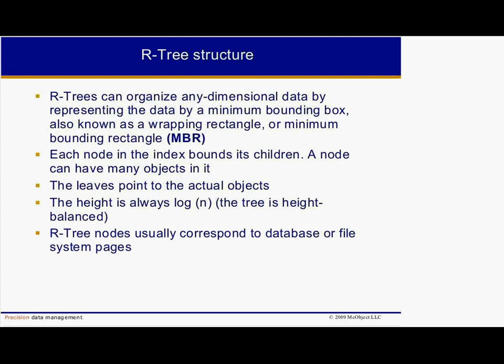If an object is represented by a point with coordinates X and Y, then the wrapping rectangle is a degenerated rectangle in which the width and height are zero, because a point has no width or height. For all other geographical objects — lines, polygons, and arbitrary shapes — the wrapping rectangle is such that the coordinates of the top left corner are smaller than or equal to the coordinates of any point of the object, and the coordinates of the bottom right corner are greater than or equal to the coordinates of any point of the object. In other words, a wrapping rectangle is the smallest rectangle that fully contains the specified object.